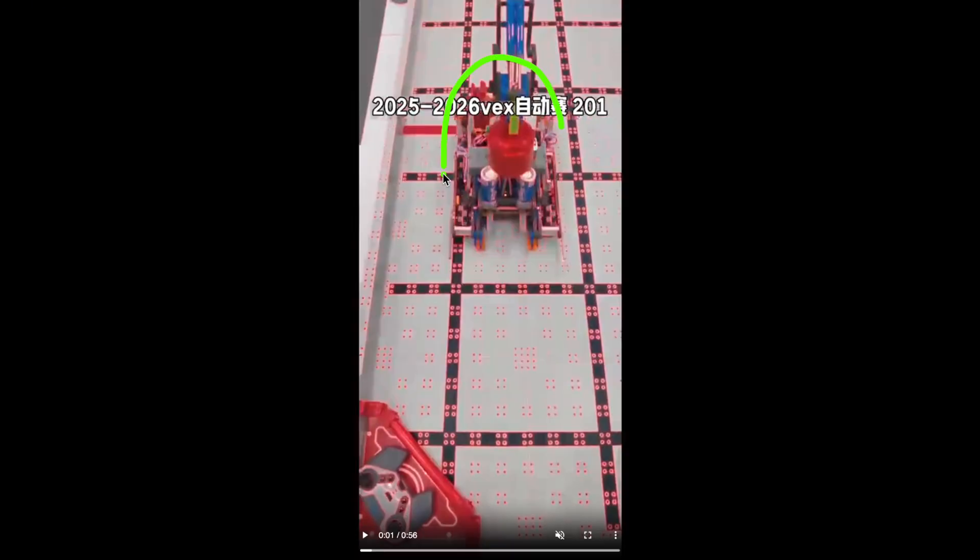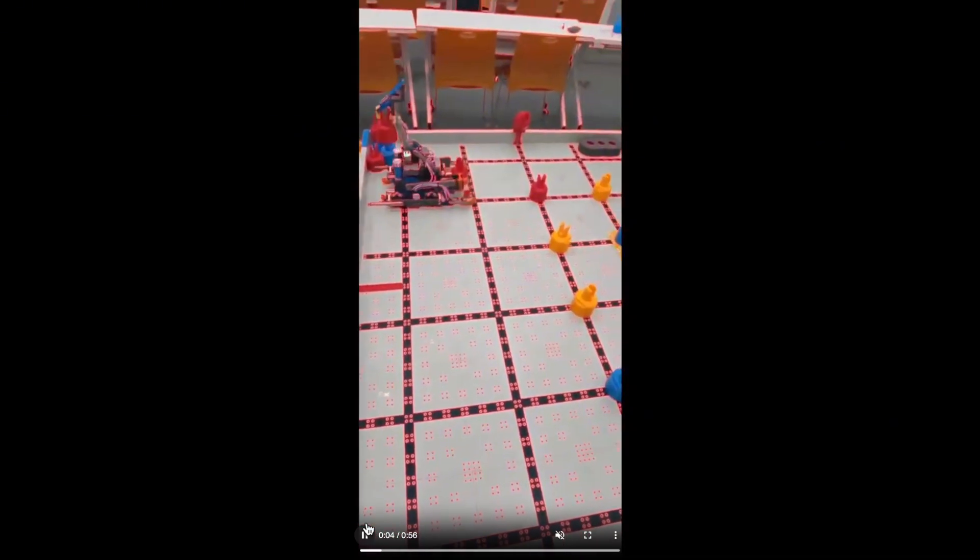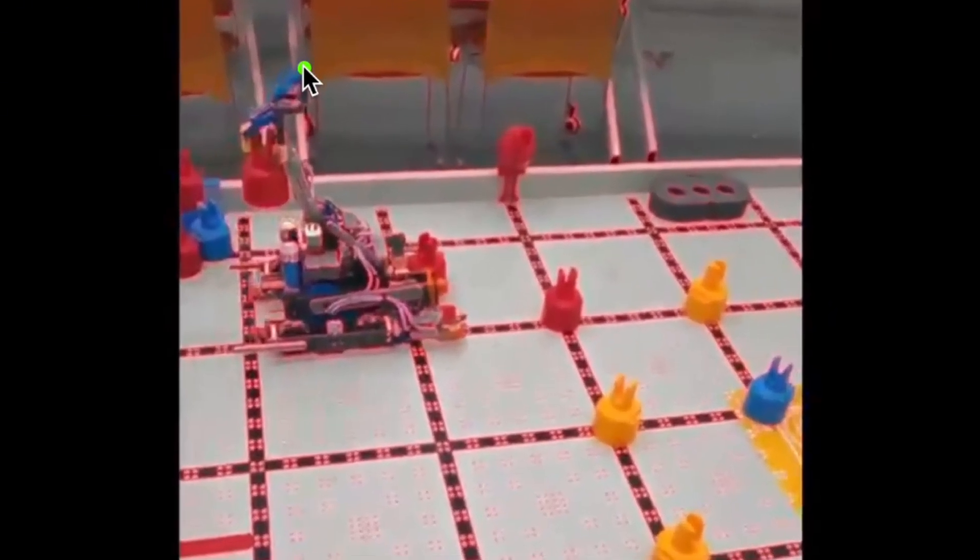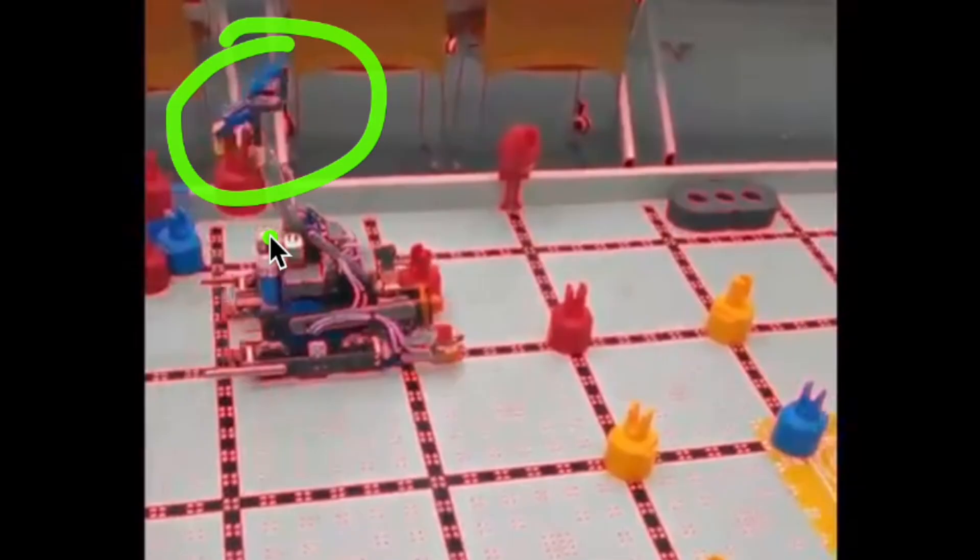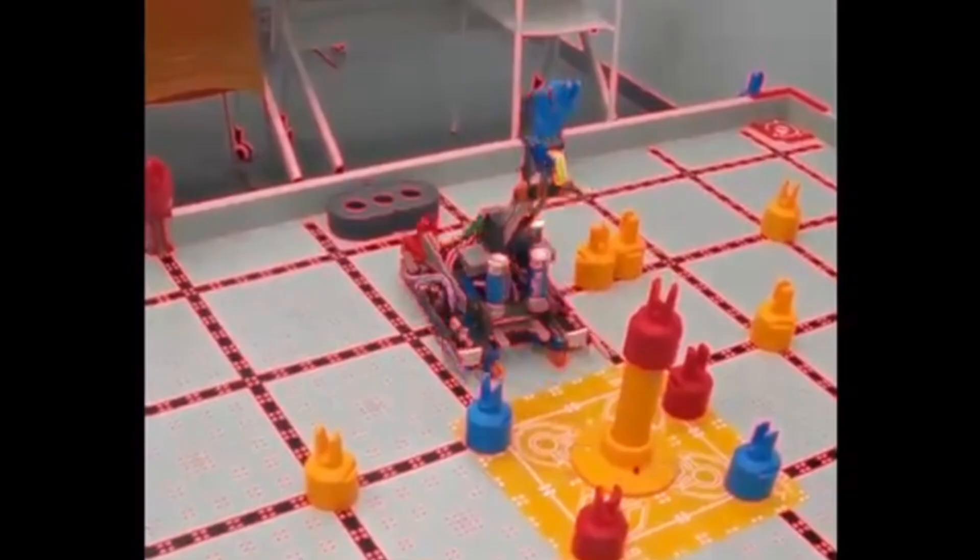You'll notice they actually use a pretty low profile preload mechanism compared to the ones we've seen in previous videos. They put it in their beam clamp right over here, so they just drop it on. Although this is really simple and makes your robot lighter, there are some downsides.